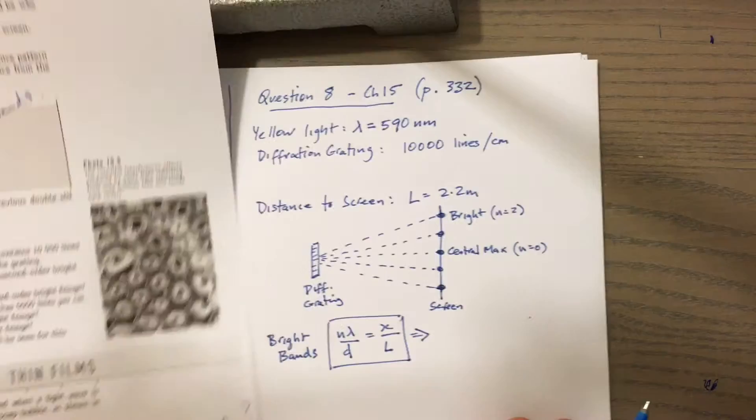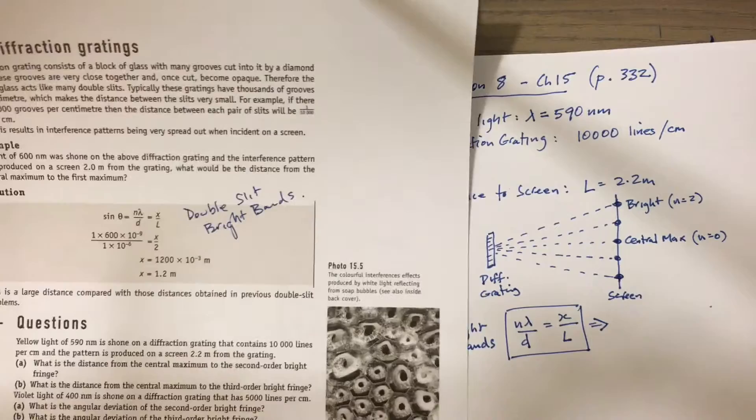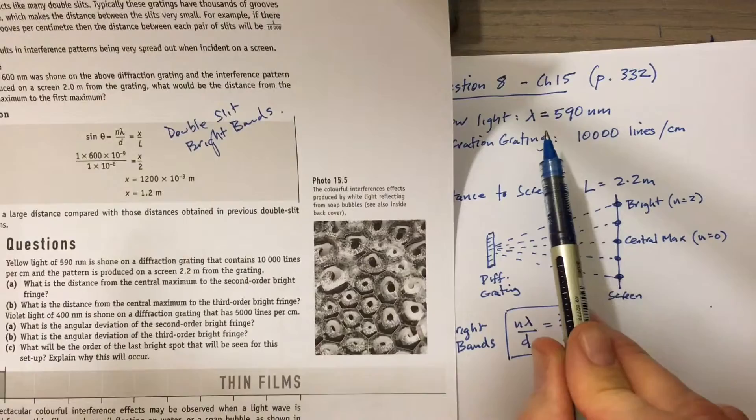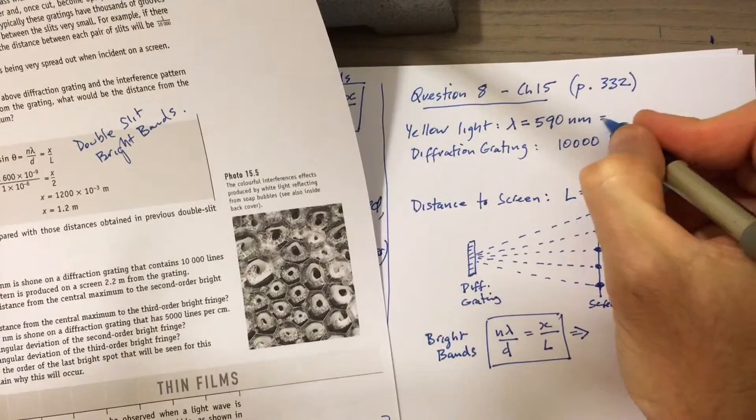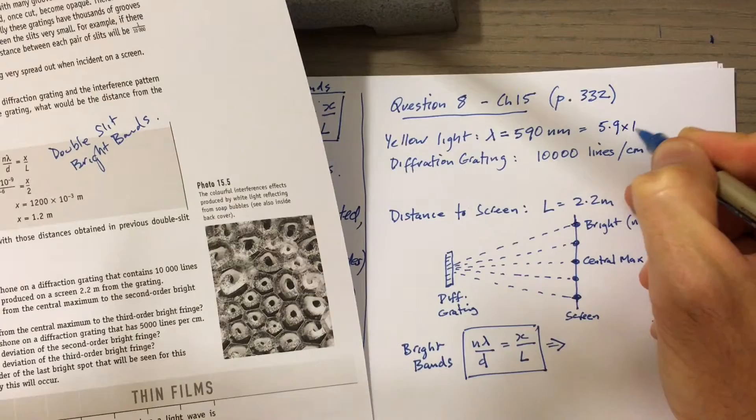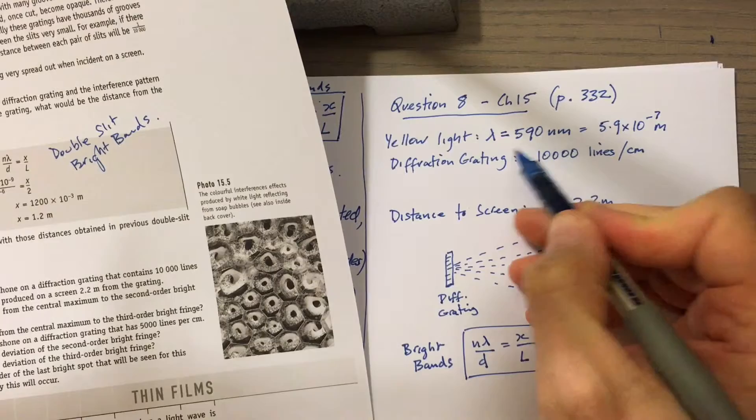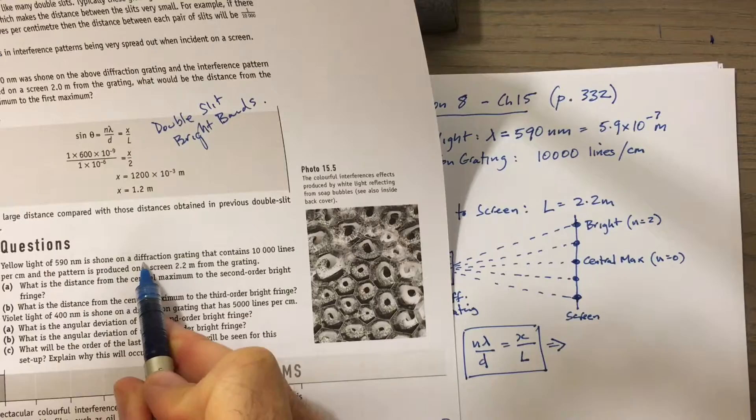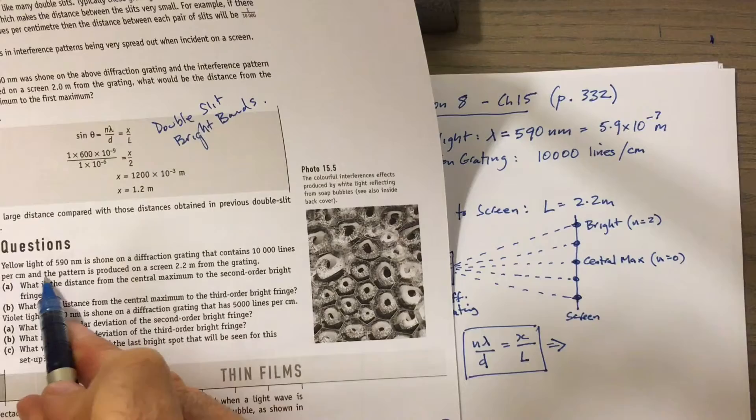So we'll look at question eight. We've got yellow light of wavelength 590 nanometers, so I've written that down here. It's always good to convert that into meters. Everything, all the distances that we're going to use in the formula, we should put them into meters. If we do that straight away, this one becomes 5.9 by 10 to the negative 7 meters. Of course nano means by 10 to the negative 9. We've got 590 nanometers which becomes 5.9 by 10 to the negative 7 meters.